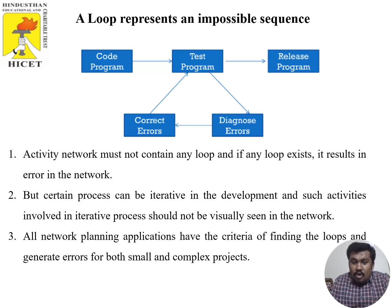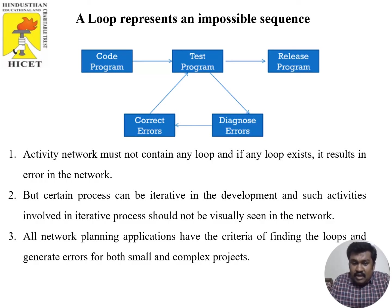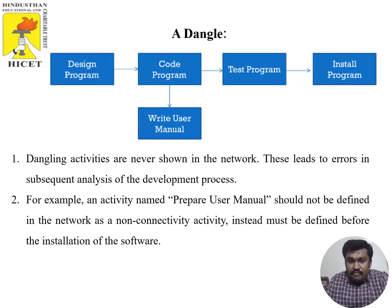Certain processes can be iterative in development. All network planning applications have criteria to find errors for both small and complex projects. If any loop exists, it indicates an error in the network that must be resolved.